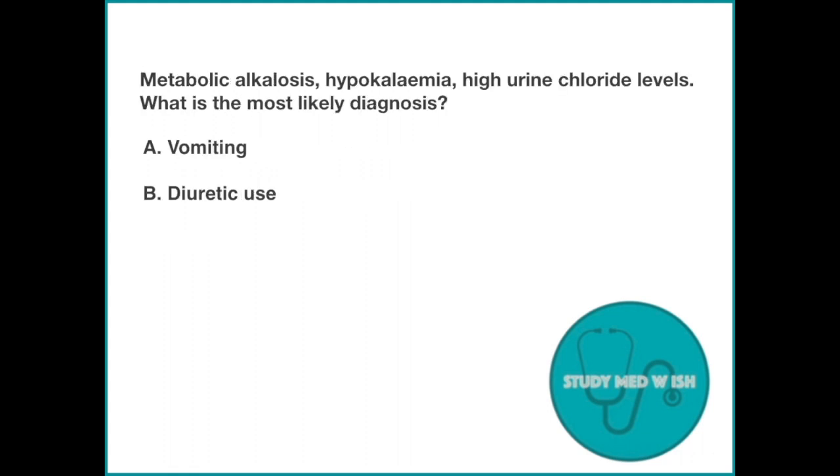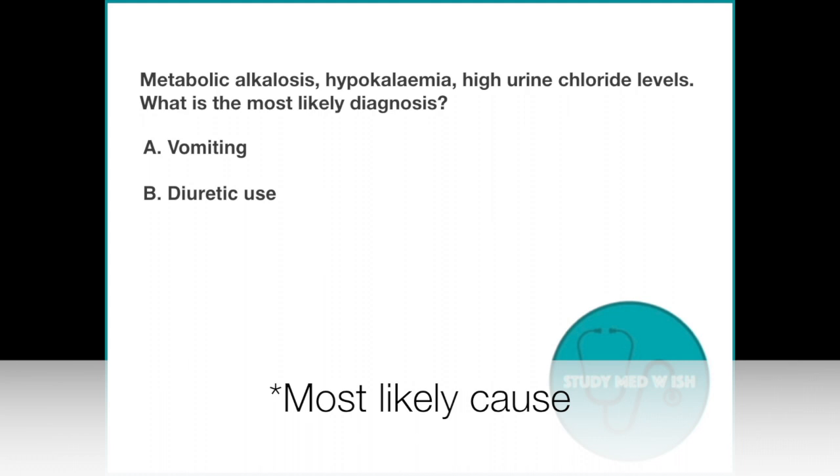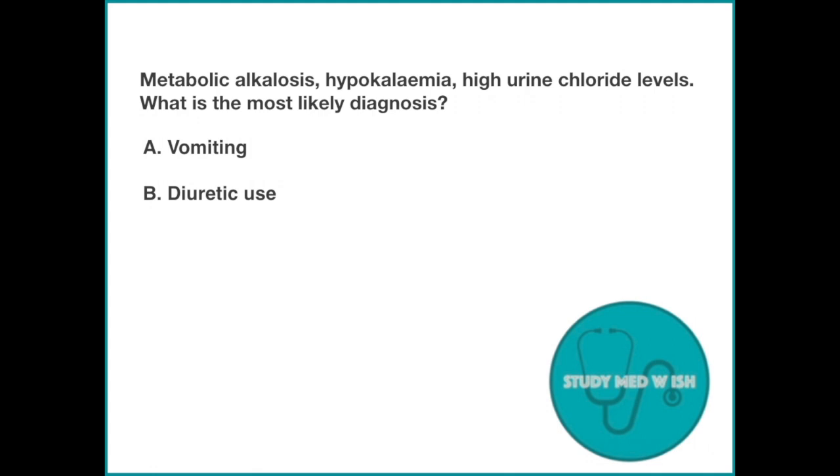Question 5. Metabolic alkalosis, hypokalemia, high urine chloride levels. What is the most likely cause of this? Option A, vomiting. Option B, diuretic use. The answer to this question is diuretic use.